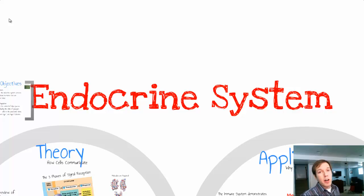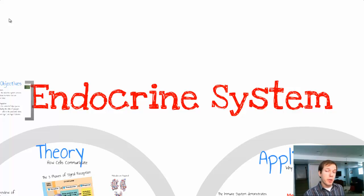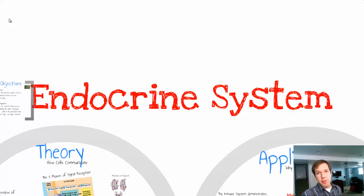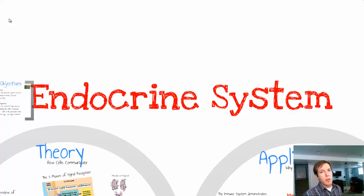The endocrine system is all about hormones and the places where those hormones are produced. Before you get too excited, today's video is not going to cover information on the sex hormones like testosterone and estrogen.